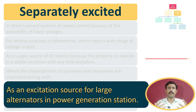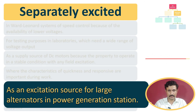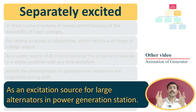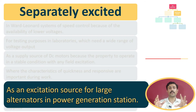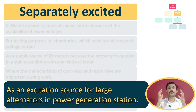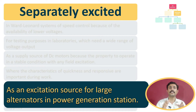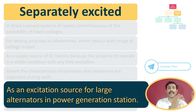In the next application, it is used for excitation of large alternators. Basically, large alternators require DC excitation to produce a constant magnetic field. This generator is used to produce that DC supply to excite the field winding in large alternators.